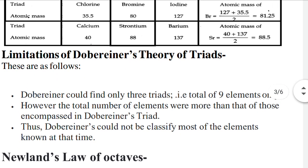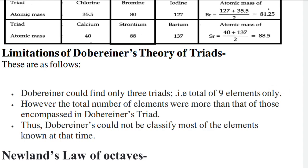Limitations of Dobereiner's Theory of Triads: He could find only three triads, meaning he could study only nine elements in total using this rule. However, the total number of elements was more than those covered by his triads. Thus, Dobereiner could not classify most of the elements known at that time.